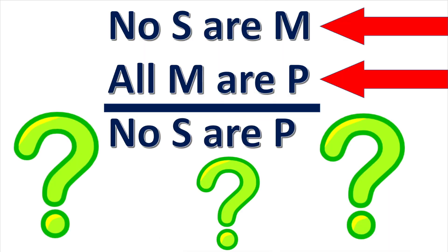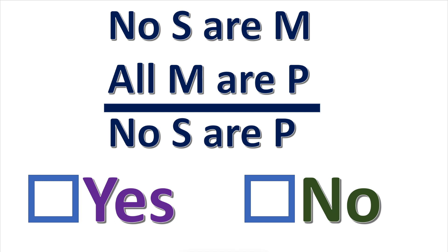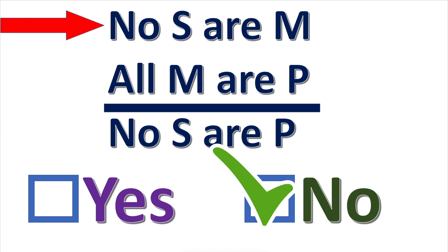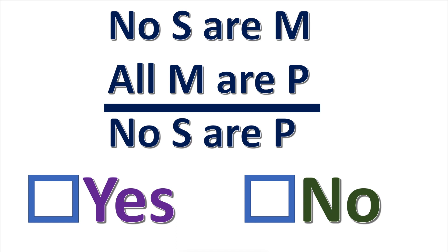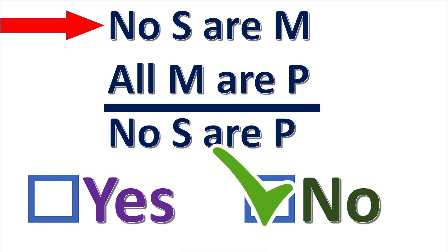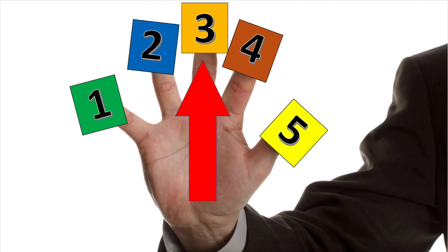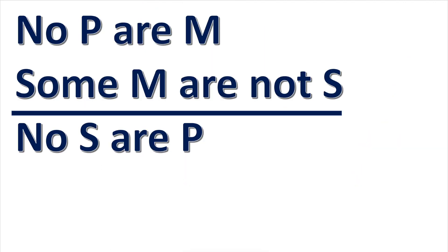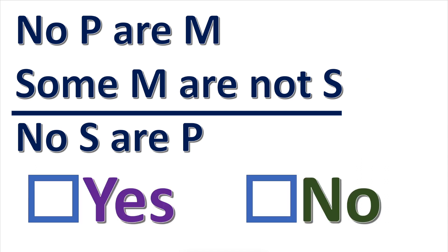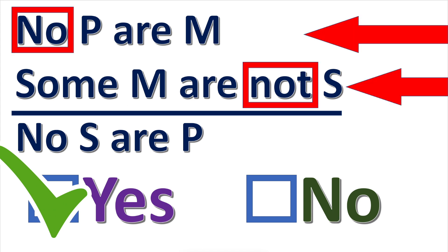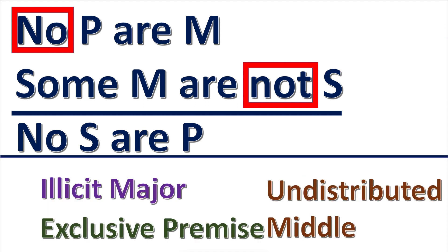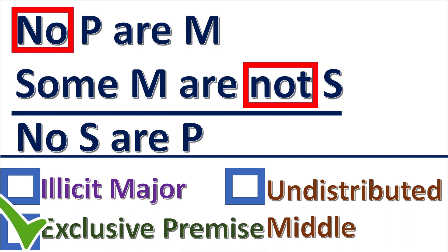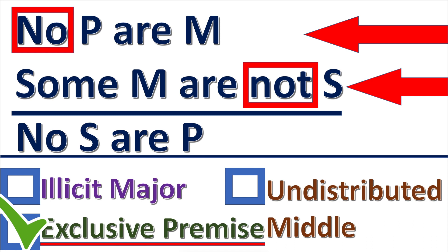Practice problems for rule three: are both premises negative? Only one premise is negative, so rule three is not broken. In the next problem, E and O propositions are both negative propositions. Since both premises are negative, the fallacy of exclusive premises is committed.